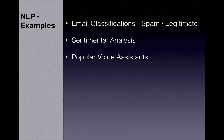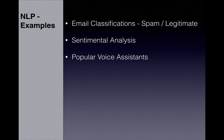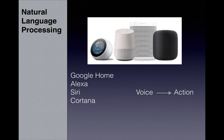NLP has been existing since 1950, but in recent years we are making a lot of successful stories and it keeps evolving day by day. Some of the examples are email classification — whether the email is spam or a legitimate email. The next one is sentiment analysis for different domains. And then come the popular voice assistants like Google Home, Alexa, Siri, and Cortana.